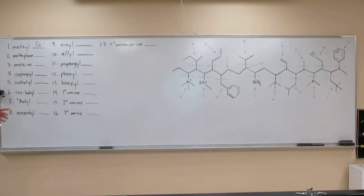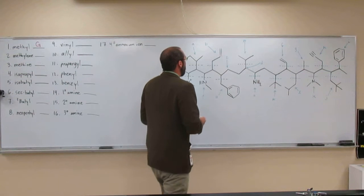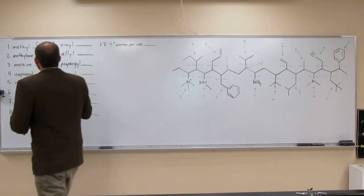Okay, methylene. Remember a methyl group is a carbon with three hydrogens, and methylene is a carbon with two hydrogens coming off. So there's your methylene at C.